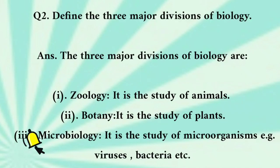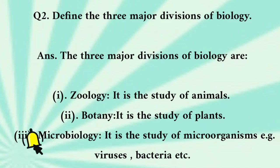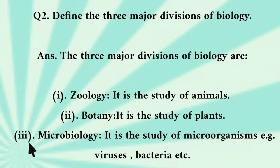Find the three major divisions of biology. The three major divisions of biology are: 1. Zoology — it is the study of animals. 2. Botany — it is the study of plants. 3. Microbiology — it is the study of microorganisms, for example, viruses, bacteria, etc.